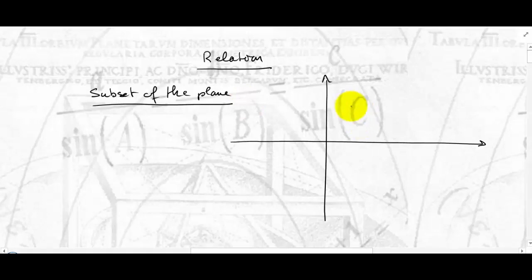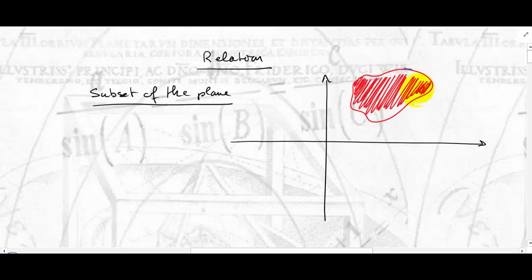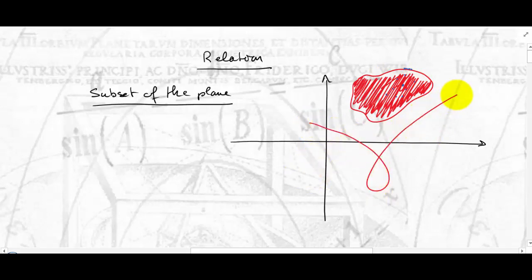What does it mean? Well, it means really any subset of the plane. Here's a plane, the Cartesian plane with two axes, and this line right here — is that a subset of the plane? Well sure, you have a lot of points on there, and it's an infinite number of points. This is a subset of the plane, this is a relation. How about if I fill in all the points on the boundary and inside — is this a relation? Sure is. You have a lot of points there. This is a subset of the plane, it is a relation, and so is any subset of the plane.